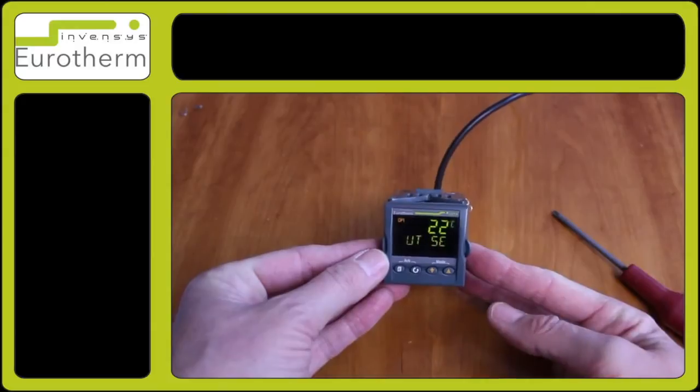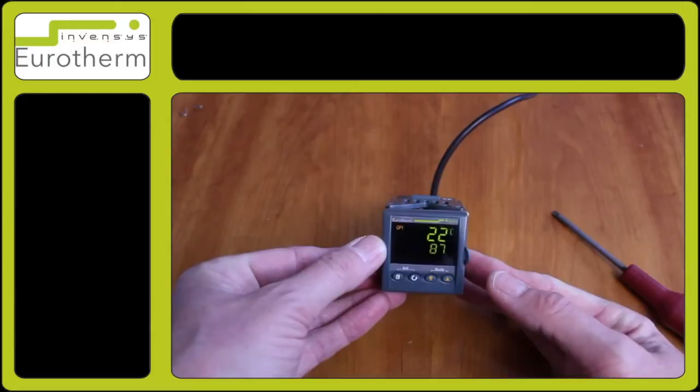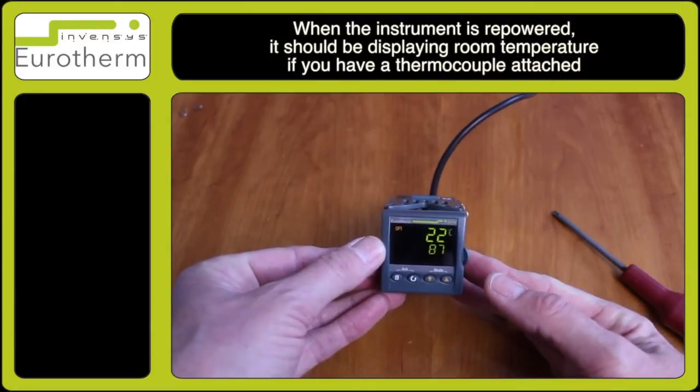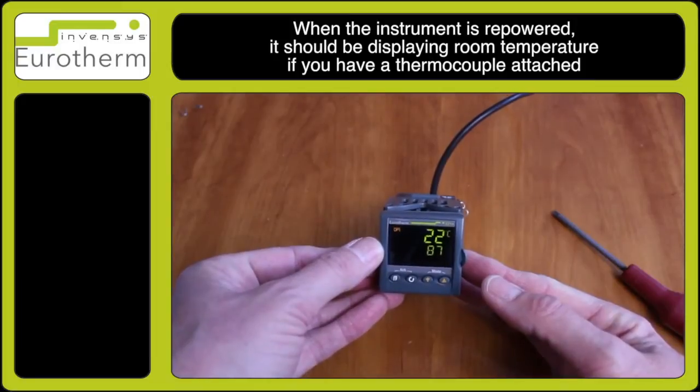Wait for the instrument to repower and observe the top display, the temperature display. This should now be showing room temperature if you've had a thermocouple connected to the unit.